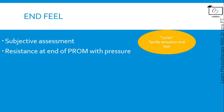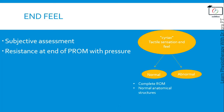End feel can be normal or abnormal. In normal end feel, the range of motion is complete. You will get abnormal end feel before the completion of range of motion. Normal end feel is due to the normal anatomical structures present there, while abnormal end feel is because of some pathology or abnormal anatomy. There are three types of normal end feel: hard end feel, firm end feel, and soft end feel.